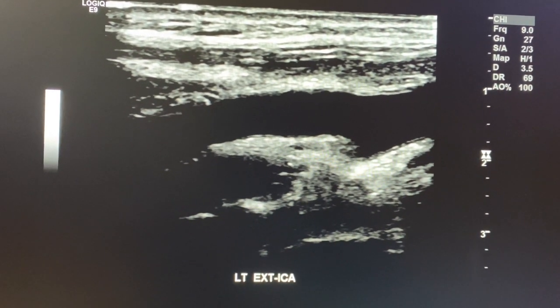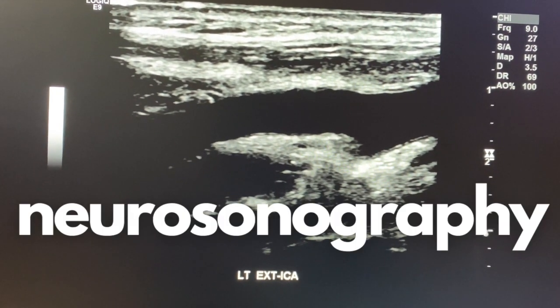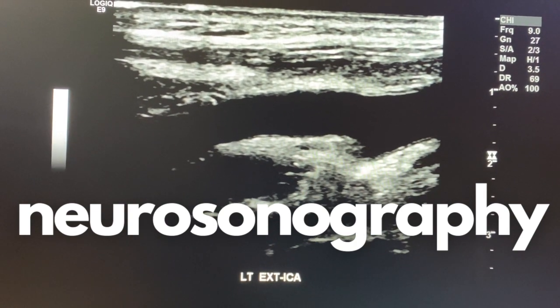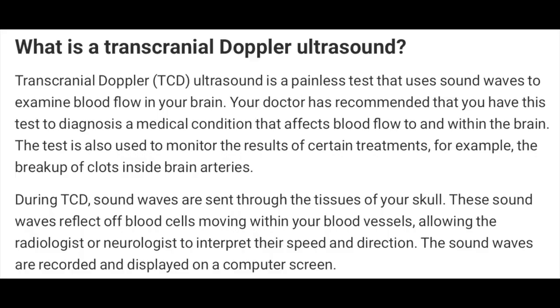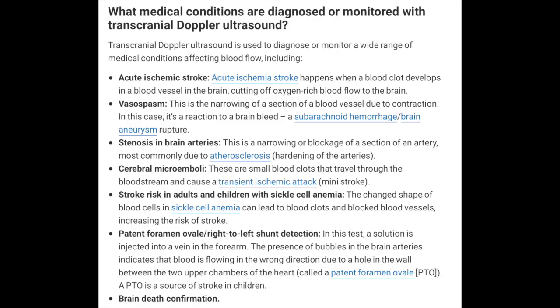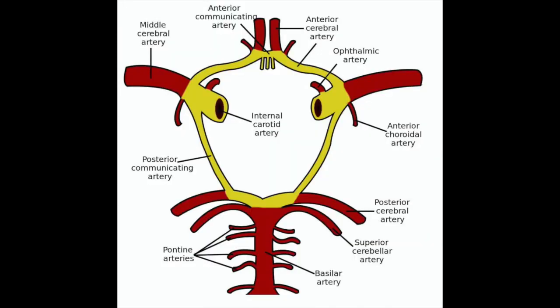We're going to quickly go over a transcranial Doppler, which is part of neurosonography — an ultrasound of the brain where we check vessel blood flow, how high the velocities are, and whether there are any vasospasms or extremely high velocities. We call it the Circle of Willis, and the ICA — internal carotid artery — connects from the neck all the way up to the brain and feeds those blood vessels. That's where we start.